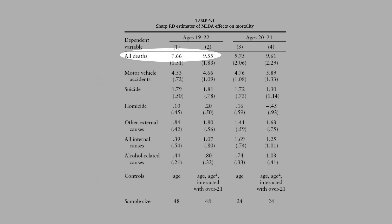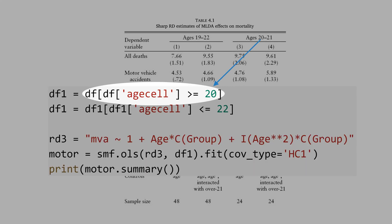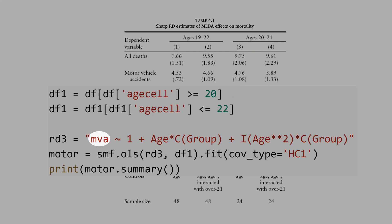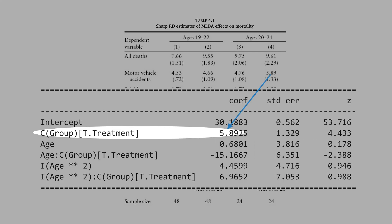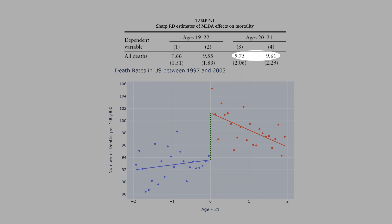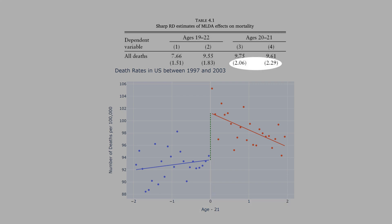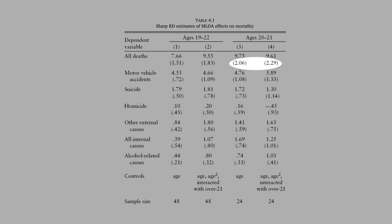We've replicated the results for all deaths. Now let's replicate the motor vehicle accidents result: 5.89. We restrict the sample to ages 20 to 21 — above 20 years and below 22 years. The dependent variable now is the mortality rate for car accidents. We get 5.89. Your intuition should be that results from a narrow window are more credible than those from a wide window, because it's more likely that control and treatment groups are comparable. But there is a trade-off: using fewer observations means larger standard errors. Notice the standard errors are smaller in the wide-window estimates.